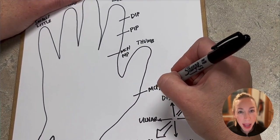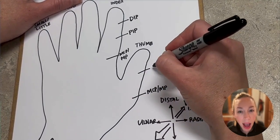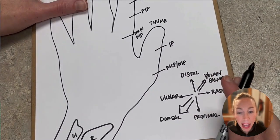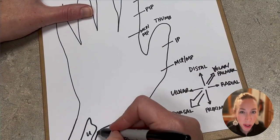The thumb has the MCP joint also, and then it just has one IP joint. It's neither distal nor proximal. At this point, you can keep drawing or you can just watch. It's up to you.